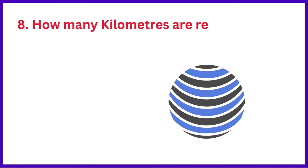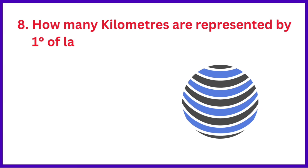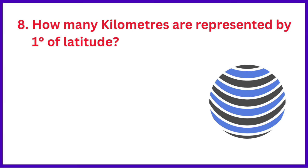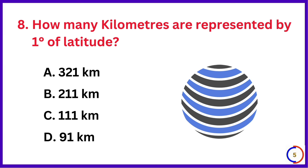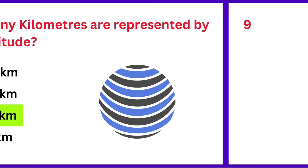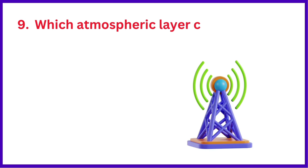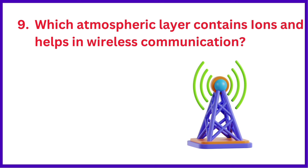How many kilometers are represented by one degree of latitude? The right answer is option C: 111 kilometers. Which atmospheric layer contains ions and helps in wireless communication?